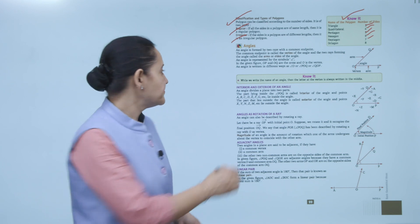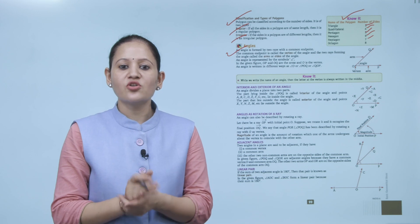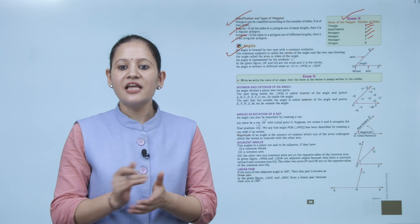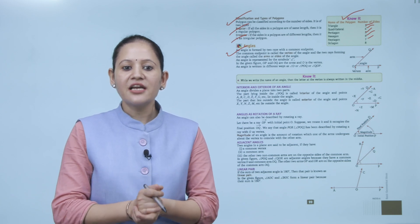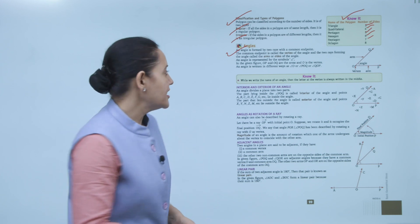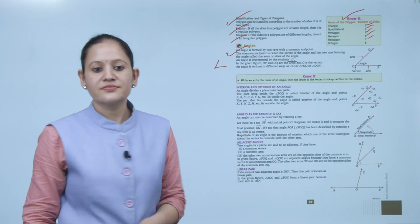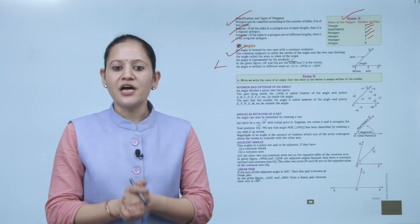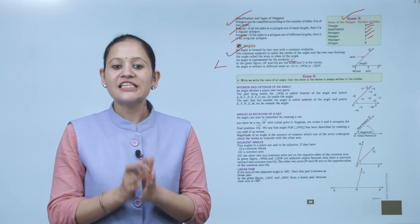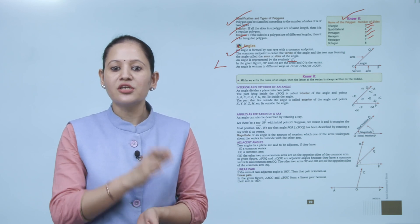Next is angles. An angle is formed by two rays with a common endpoint. The common endpoint is called the vertex of the angle, and the two rays forming the angle are called the arms or sides of the angle. An angle is represented by the symbol ∠. In the figure, OP and OQ are the arms and O is the vertex. An angle can be written as ∠O, ∠POQ, or ∠QOP.